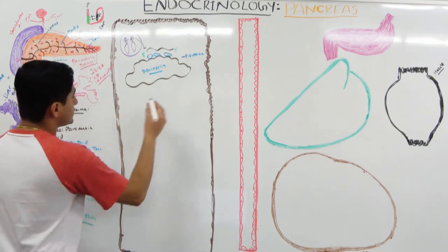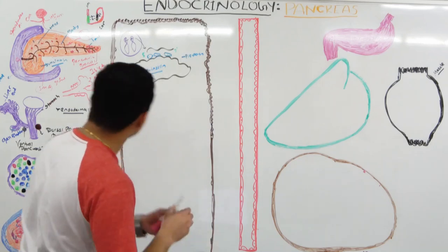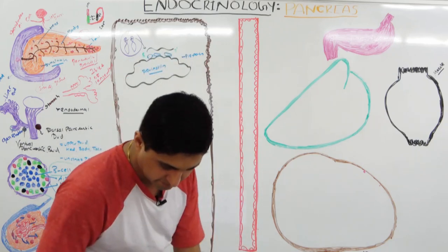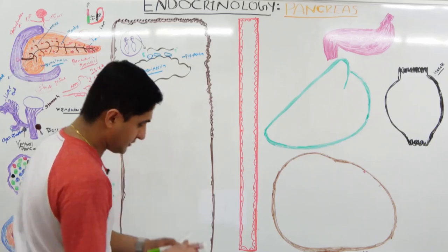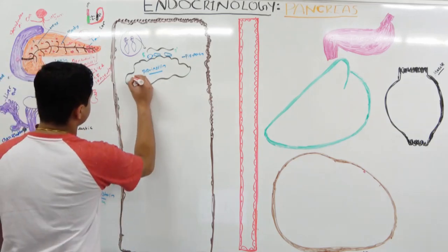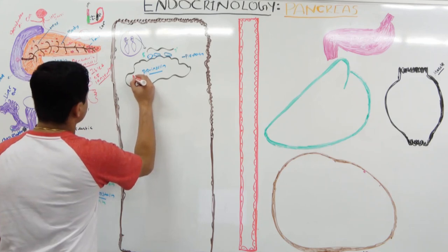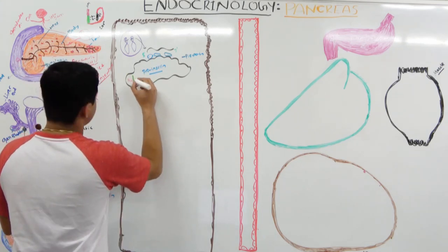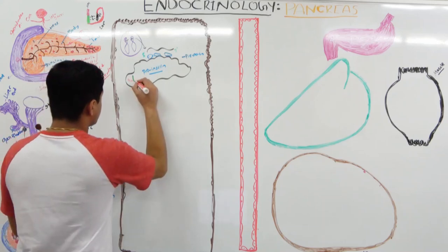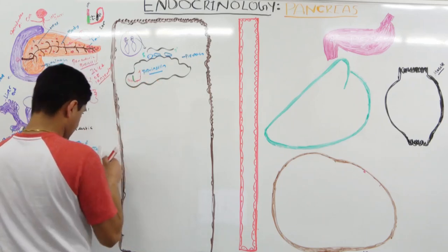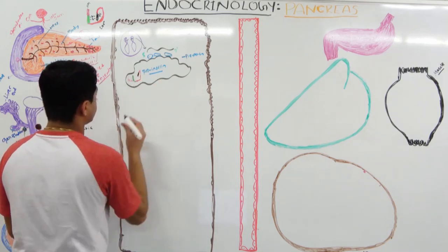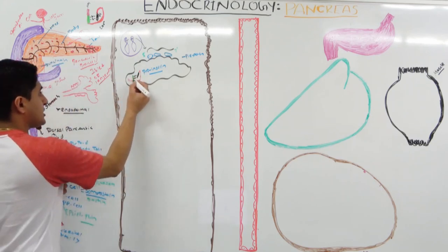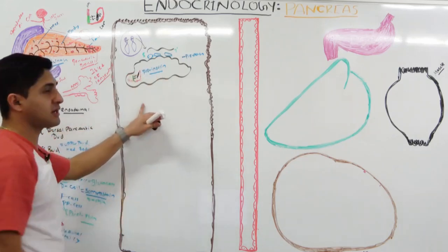Proinsulin contains three components: the B chain (green), the C chain (red), and the A chain (black). The A and B chains are bound together with disulfide bonds. This structure is your proinsulin.